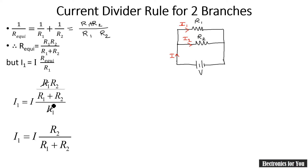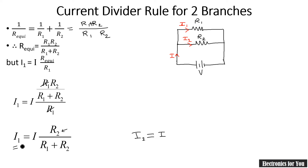Using the same concept, I2 equals I times R1 in the numerator over R1 plus R2 in the denominator. So this is the current divider rule for a circuit having two branches.